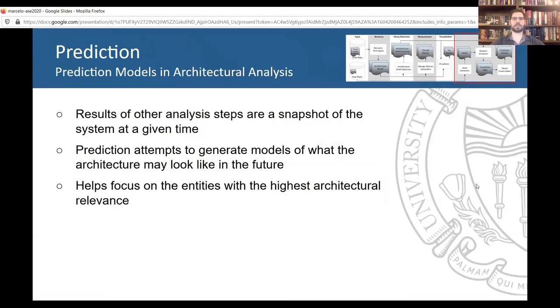The fifth task of architectural analysis performed by Arcade is prediction. The other four tasks focus on obtaining results to give a snapshot of the system at given times, or to evaluate the decay and change over the history of the system. Prediction attempts to leverage those results to generate models of what the architecture may look like in the future. This helps engineers focus their efforts on entities with the highest architectural relevance.